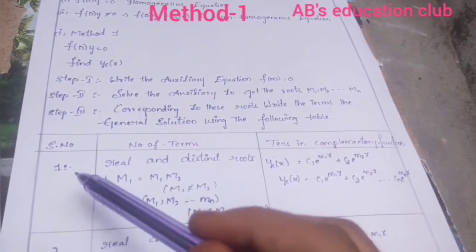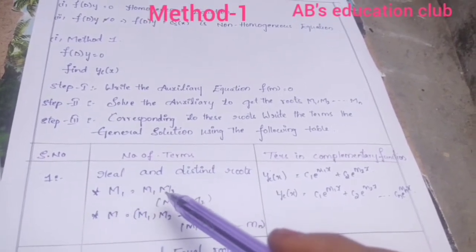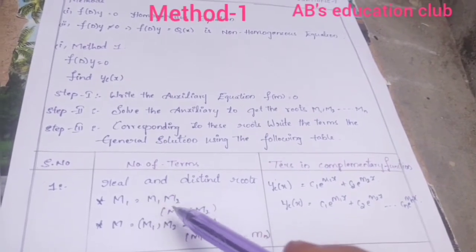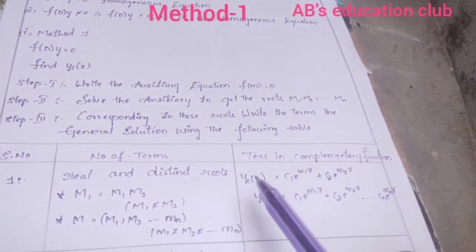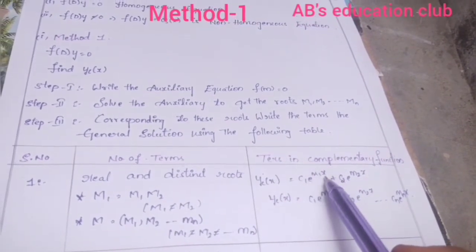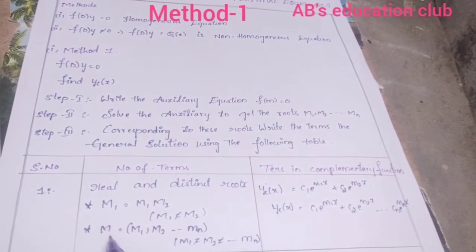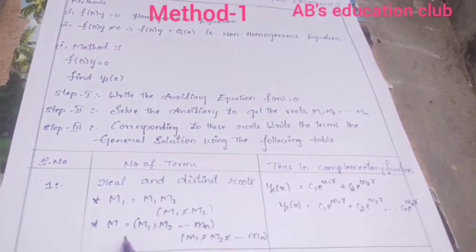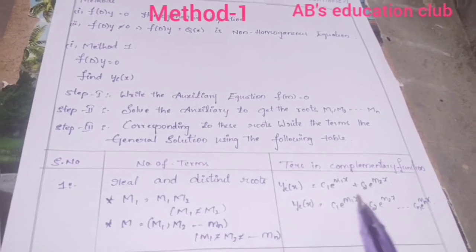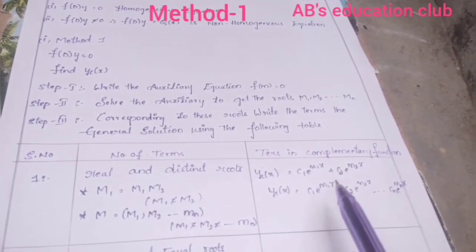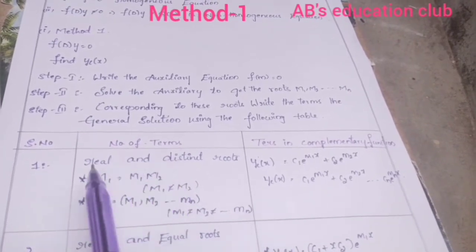Case 1: Real and distinct roots. For a quadratic equation, m = m1, m2 where m1 ≠ m2 — the roots are different. The complementary function is yc(x) = c1·e^(m1·x) + c2·e^(m2·x). For higher-order polynomials with n distinct real roots, yc(x) = c1·e^(m1·x) + c2·e^(m2·x) + ... + cn·e^(mn·x).